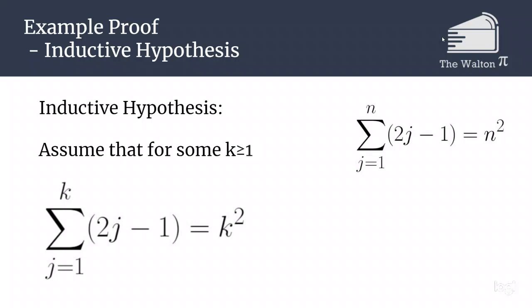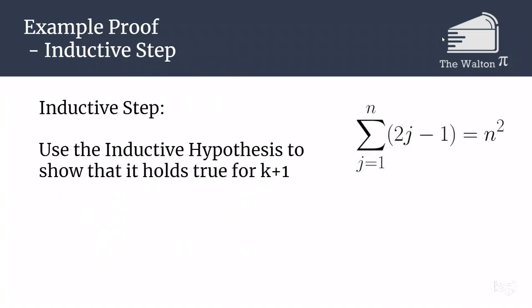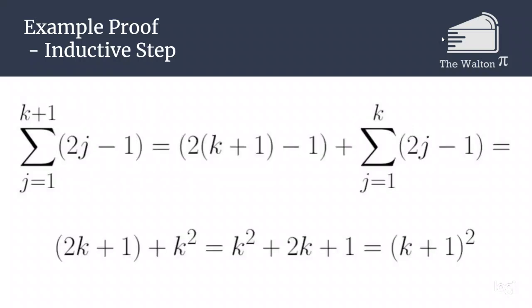We will now use this in our inductive step to show that it will also hold for k plus 1. The sum from j equals 1 to k plus 1 of 2j minus 1, we can pull out the k plus 1 term from there, and so we have 2 times k plus 1 minus 1 plus the sum from j equals 1 to k of 2j minus 1.